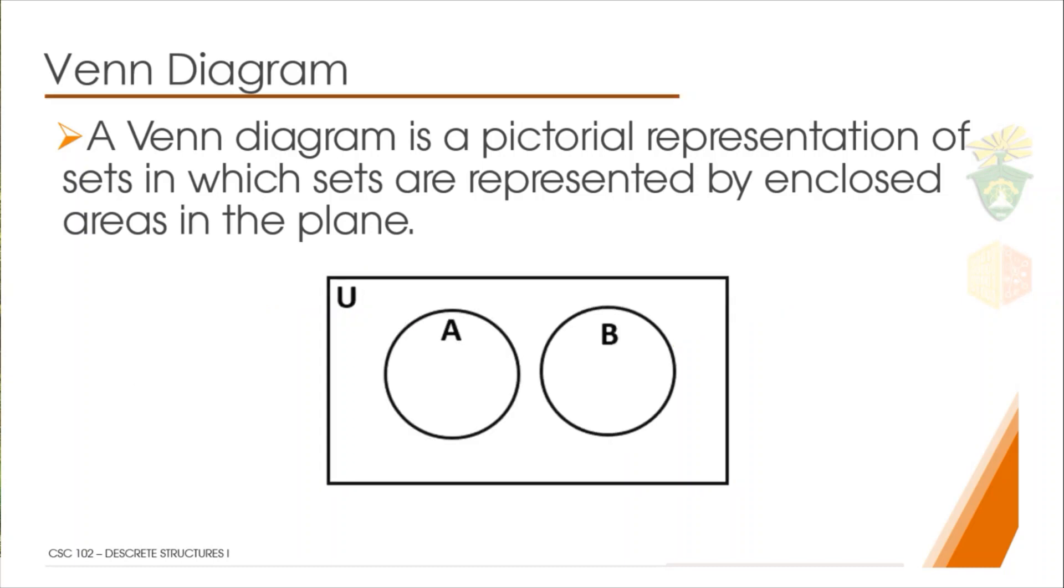We can have more than one set. In this example, we have two sets inside the universal plane, the universal set: we have set A and set B.